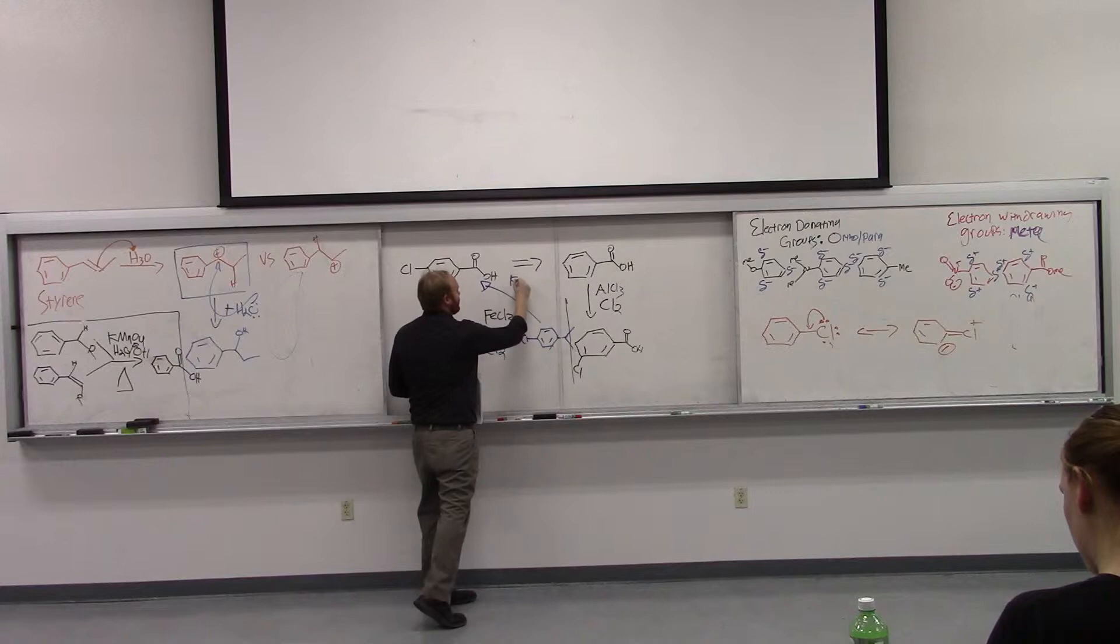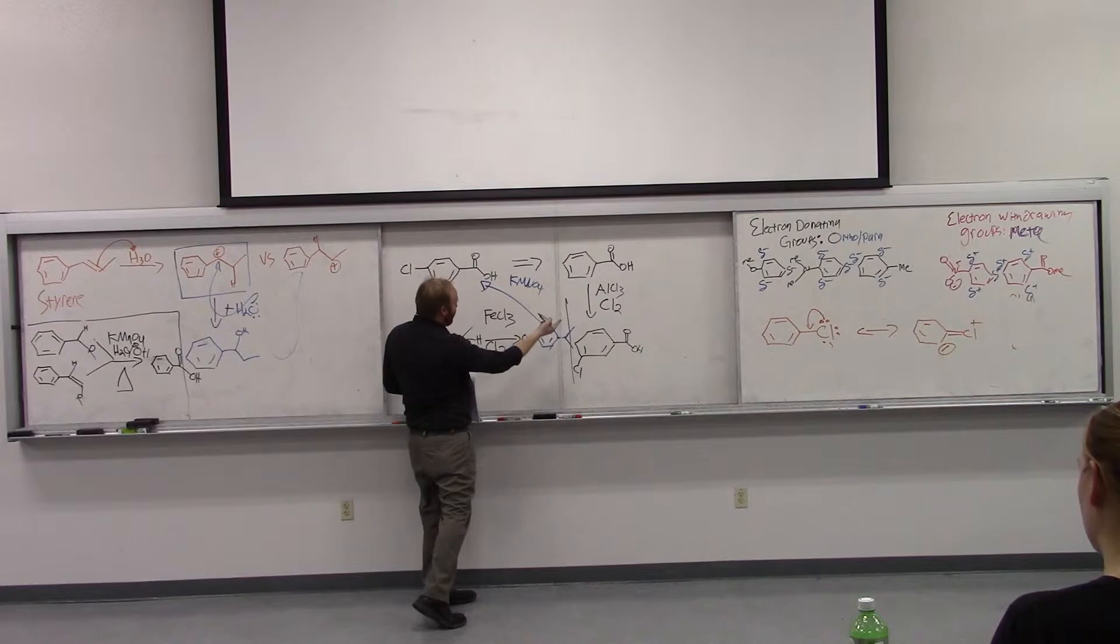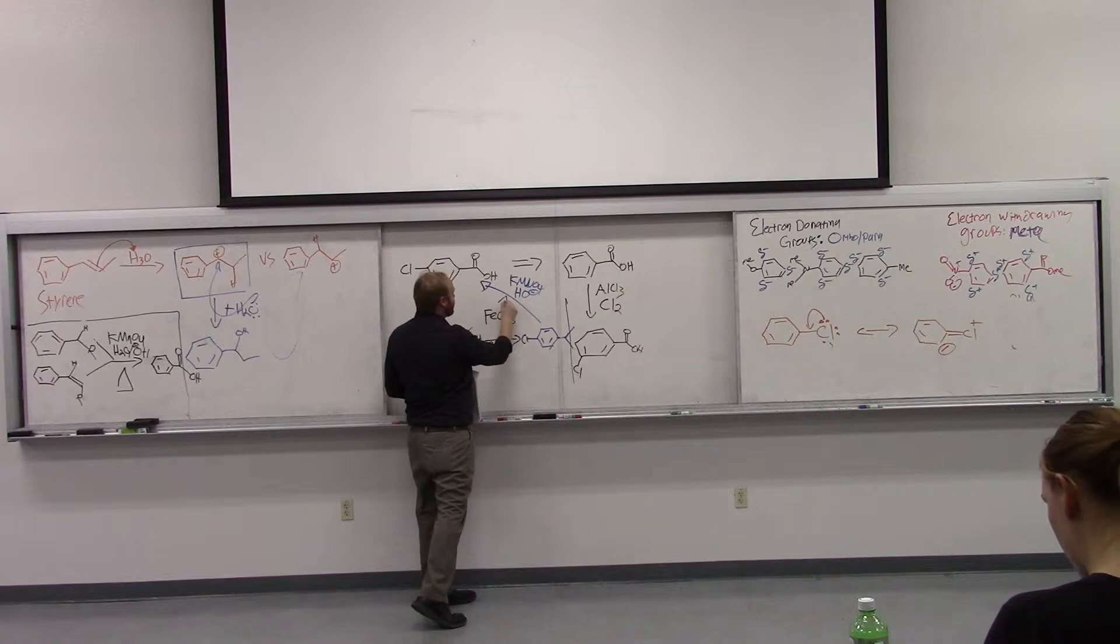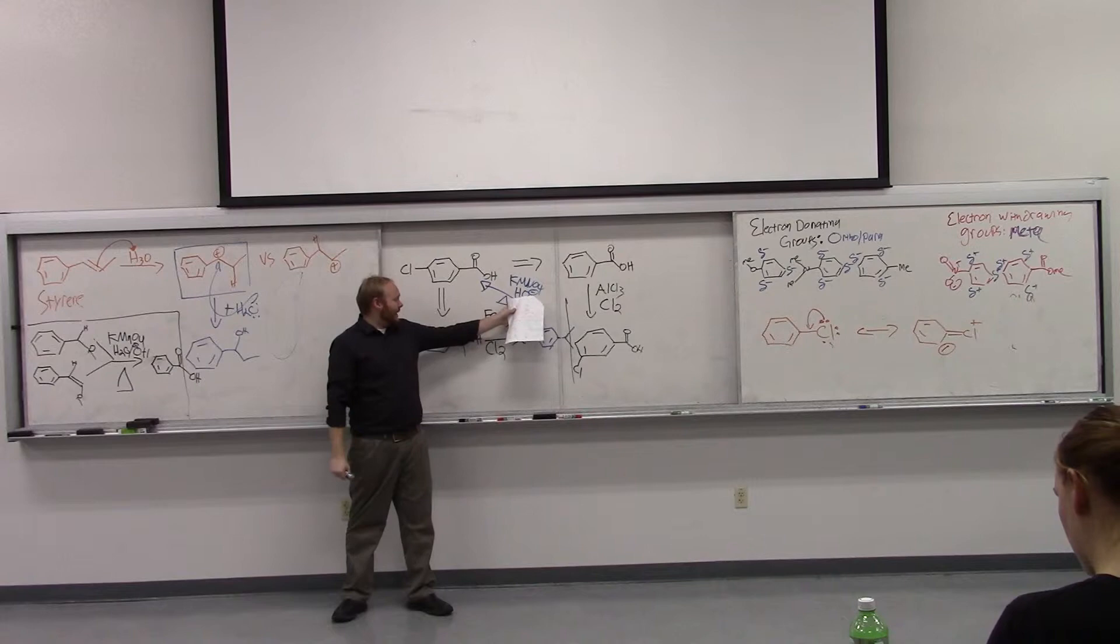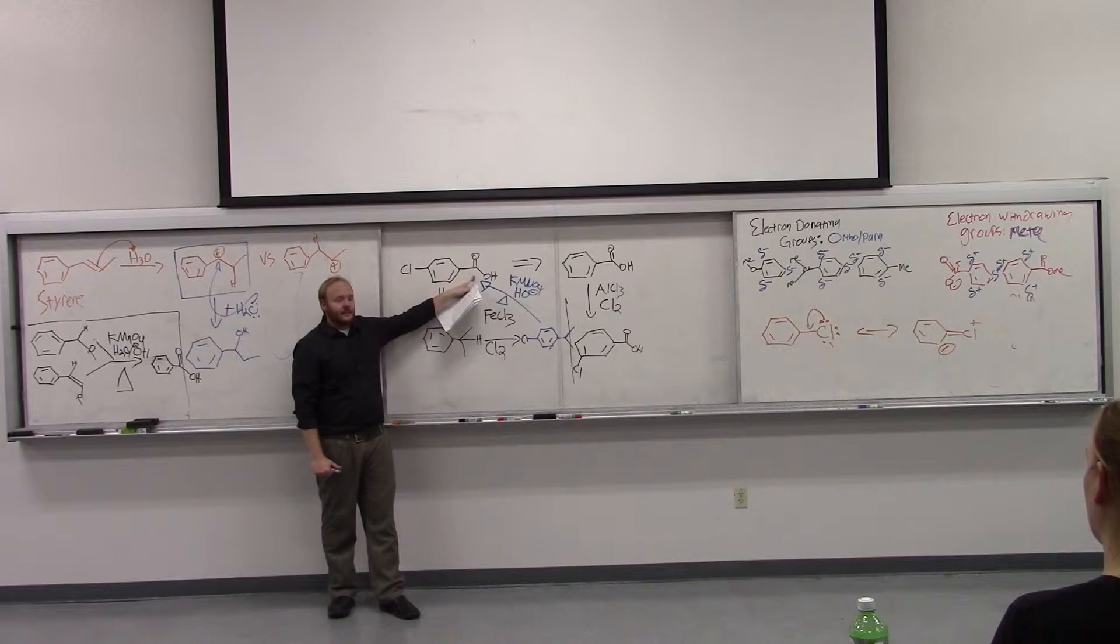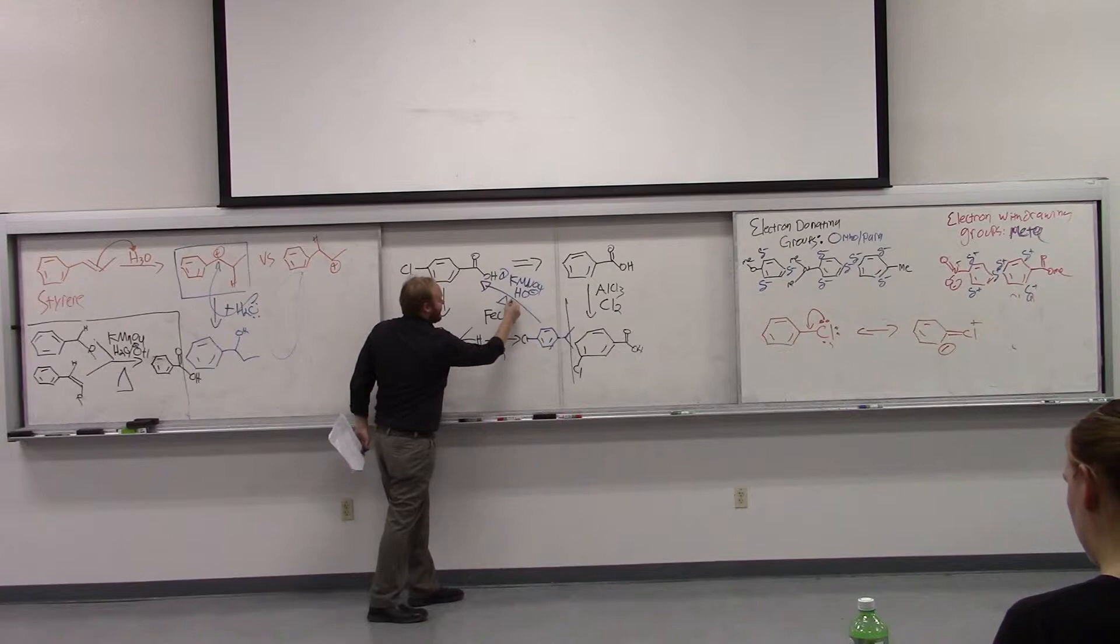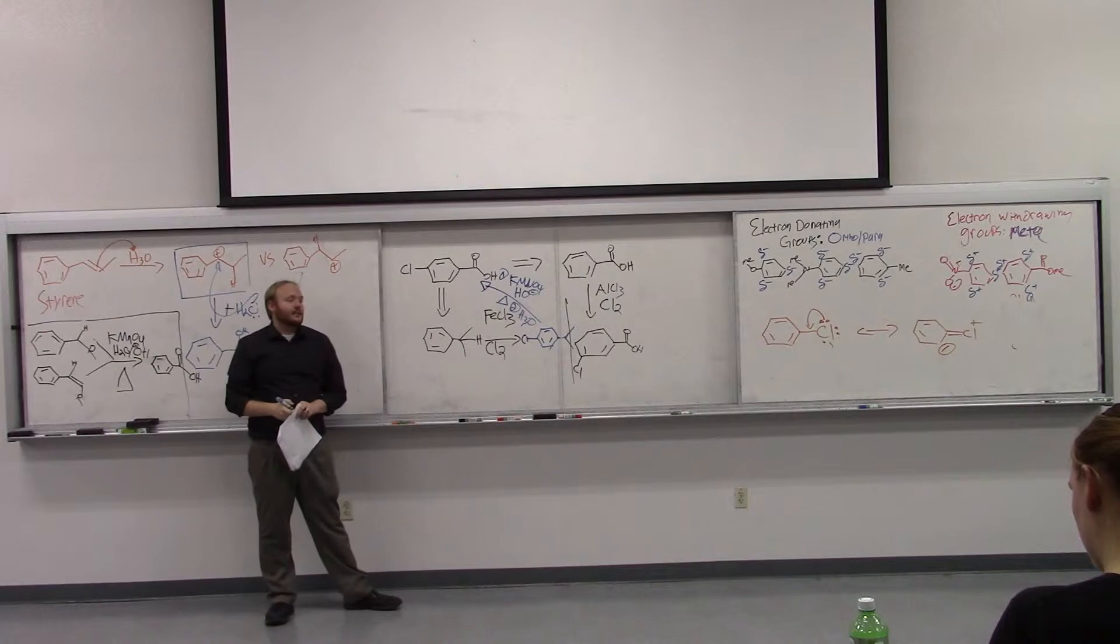And then, so we just used an alkyl group to do an ortho para direction. And we used a sterically larger alkyl group to dissuade formation of the ortho product and favor formation of the para product. All right. And then all we have to do to get our final product is to do the KMnO4 oxidation.